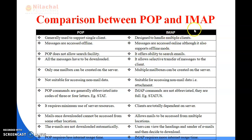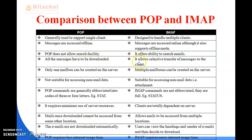Now, what is the difference between POP and IMAP protocol? In POP it is generally used with a single client, but IMAP handles multiple clients. Messages are accessed offline in POP, but in IMAP they are accessed online. POP does not allow the ability to search emails, but IMAP offers the ability to search emails. All messages have to be downloaded in POP, but IMAP allows selective transfer of messages to the client.